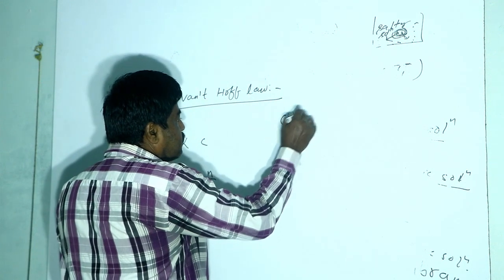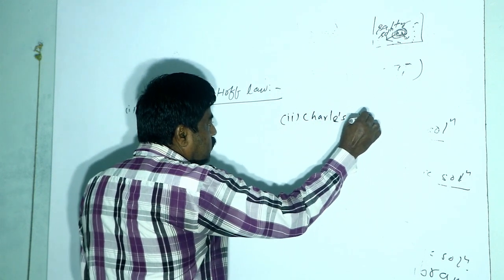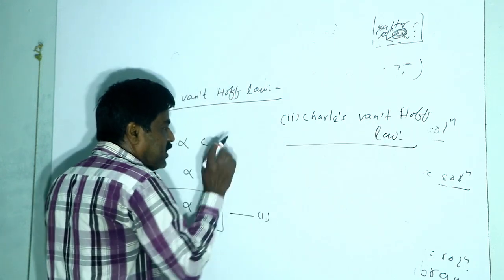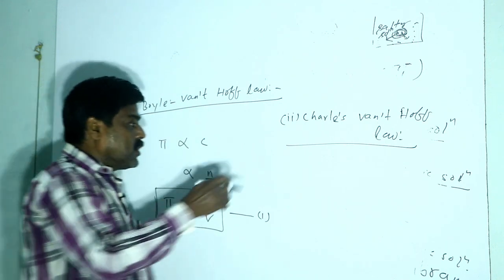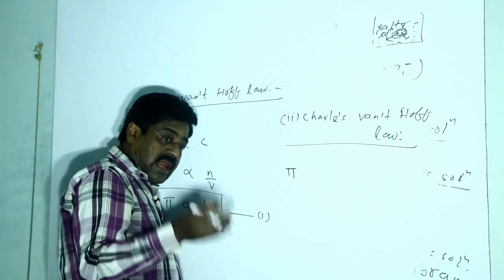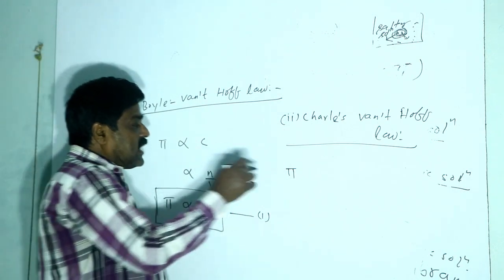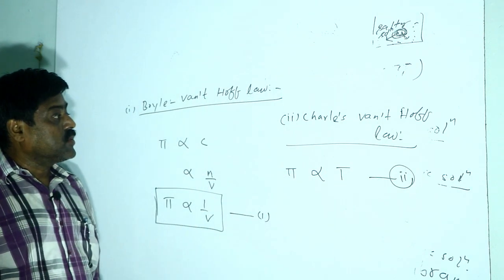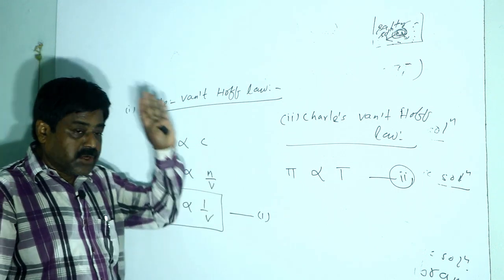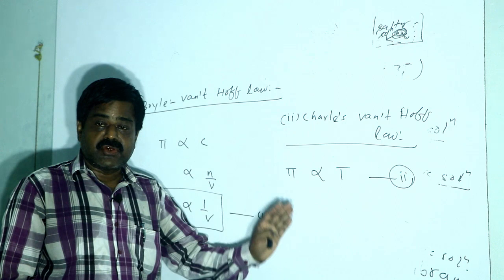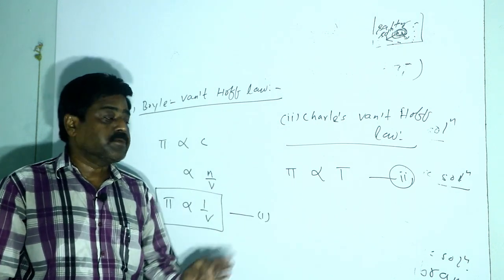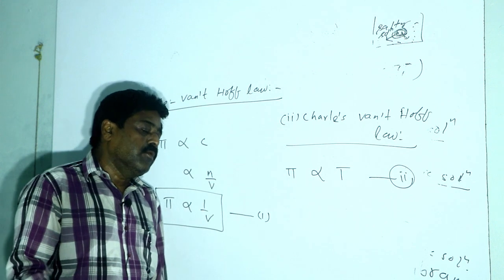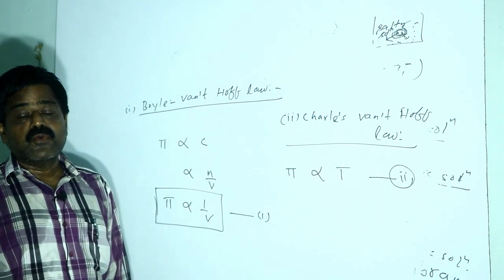The Charles-Van't Hoff law states that at constant concentration, the osmotic pressure of a dilute solution is directly proportional to the absolute temperature. When the temperature of the solution is high, more solvent molecules can flow to the solution side, giving rise to greater osmotic pressure.